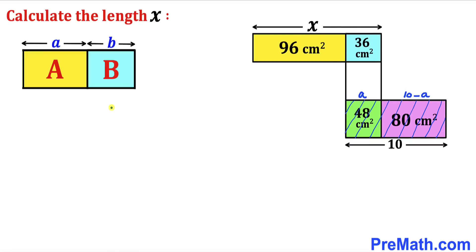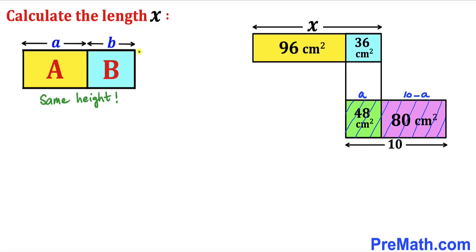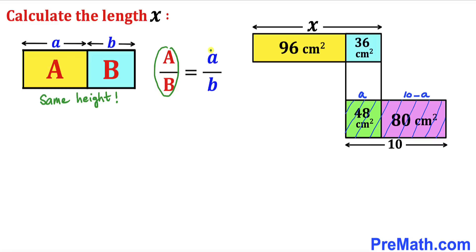Now let's recall a crucial fact. If two rectangles have areas a and b with respective side lengths a and b, and both rectangles share the same height, then the ratio of their areas equals the ratio of their side lengths.